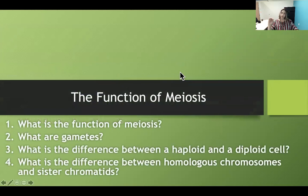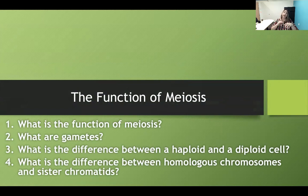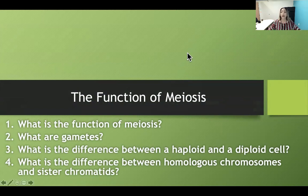For the first section on the function of meiosis, you need to know what gametes are, be able to explain the difference between a haploid and a diploid cell, and explain the difference between homologous chromosomes and sister chromatids. We've gone over that topic before, but it's important to understand it well.